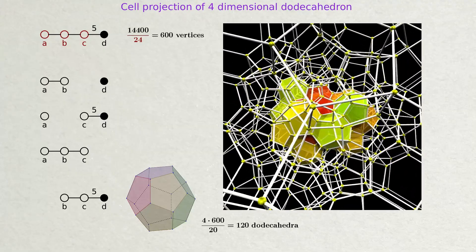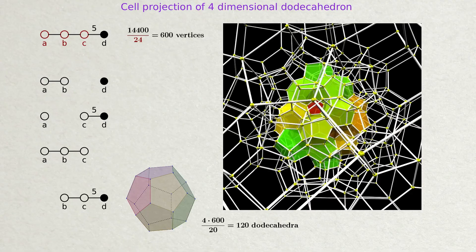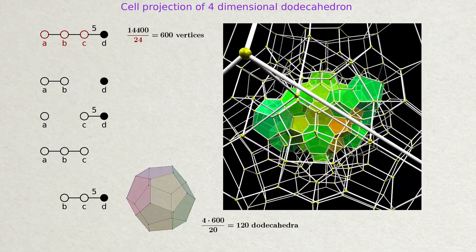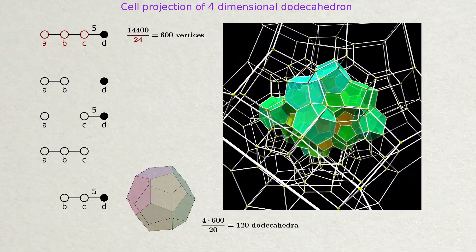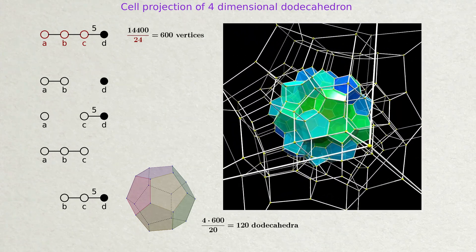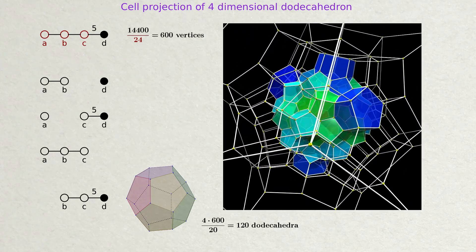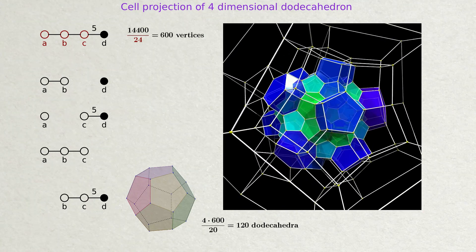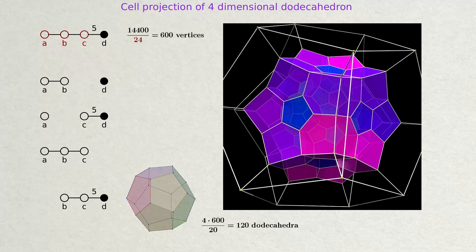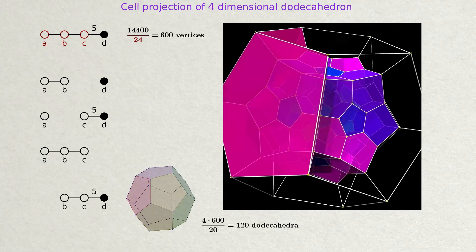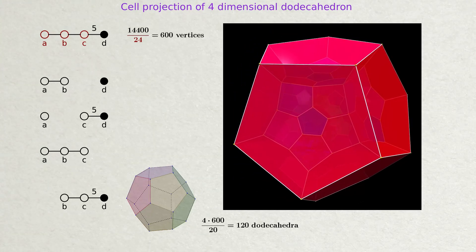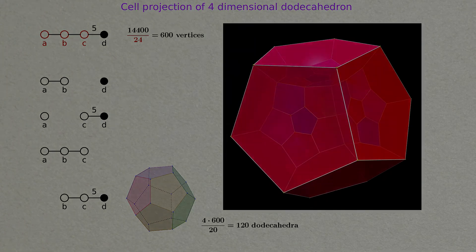The road is paved that leads to four-dimensional polytopes of all kinds. There are even more reflection groups in four dimensions than there are in three dimensions — they are waiting to be explored systematically in further videos. Thanks for watching. Please leave your thoughts and recommendations in the comments. If I ever have 14,400 likes on this video, I will try to visualize the polytope with 14,400 vertices. I promise. Bye!